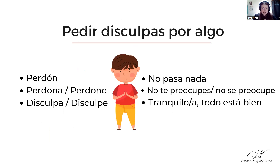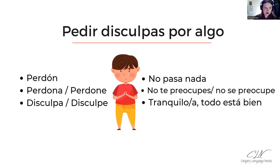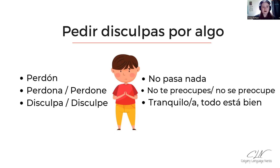Muy bien. Empezamos con pedir disculpas por algo. So let's start with how do we say sorry in Spanish, and how do we respond to somebody saying sorry to us? So this is the interaction and this here is a response. ¿Qué podemos decir? El más genérico es perdón. Perdón. And then, excuse me, more informally: perdona — for tú — perdona. Or: perdóname. And a more formal one for usted is going to end with an i: perdone.